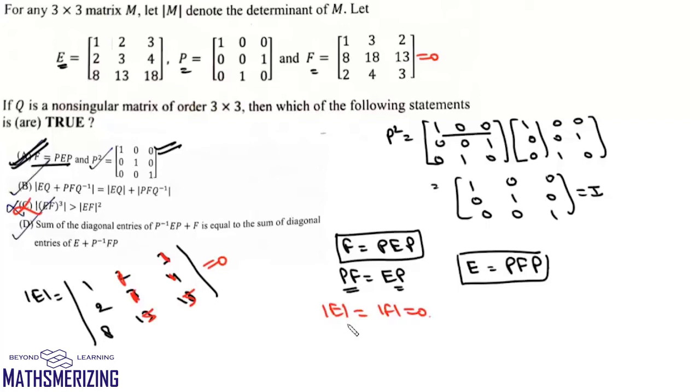Since det(E) and det(F) are both zero, if we look at the right-hand side: det(E)·det(Q) + det(P)·det(F)·det(Q⁻¹). Since this is 0 and this is 0, the right-hand side will be 0.